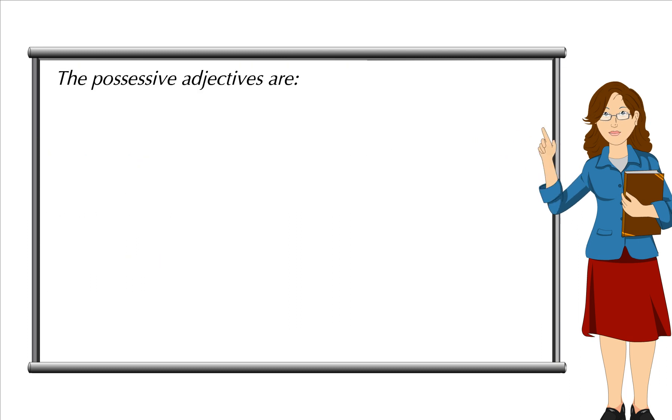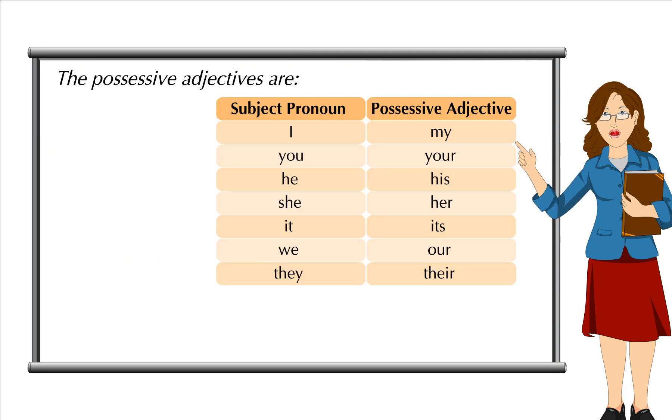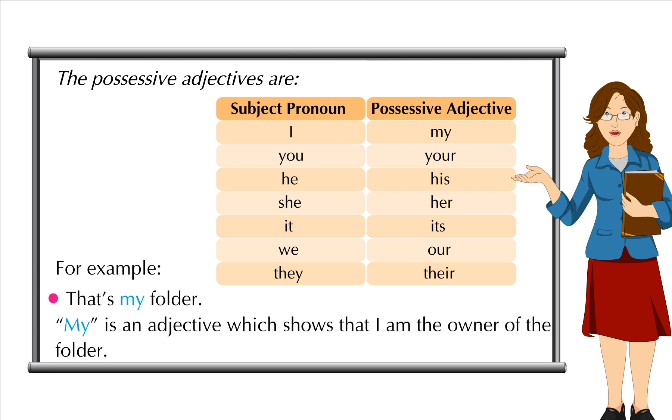Possessive adjectives go before their nouns. The possessive adjectives are: I-my, you-your, he-his, she-her, it-its, we-our, they-their. For example, that's my folder.